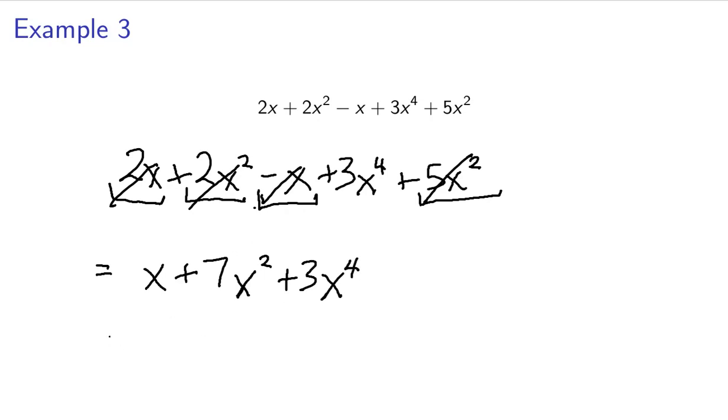And if I want to be just a little bit more standard, I think just about any teacher would accept this as an answer. But generally speaking, we like to have our variables and our exponents in descending order. So I'd rather have 3x to the fourth. That's bad handwriting. 3x to the fourth plus 7x squared plus x.